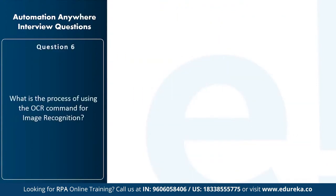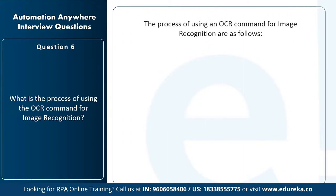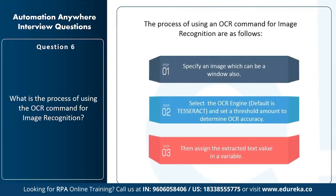Next question: what is the process of using an OCR command for image recognition? Step one: specify an image or window. Step two: select the OCR engine — by default it is Tesseract — and set the threshold amount to determine OCR accuracy. Step three: assign the extracted text value to a variable so the output can be displayed in a message box or stored in a file.